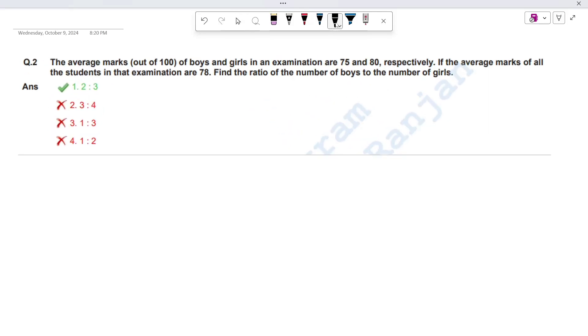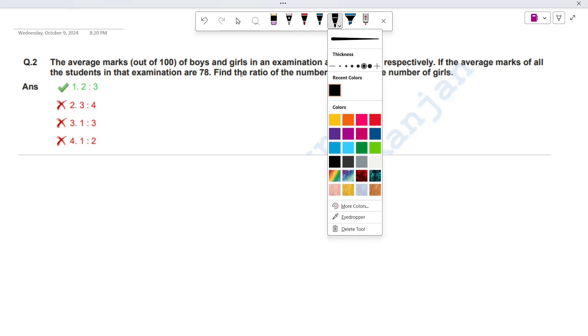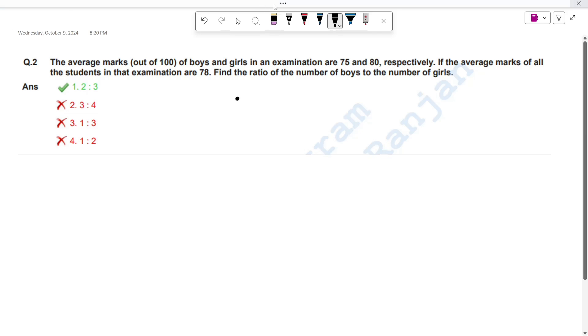Now we solve this question. The average marks out of 100 of boys and girls in an examination are 75 and 80 respectively. If the average marks of all the students in the examination is 78, find the ratio of boys to girls. It's a very easy question.